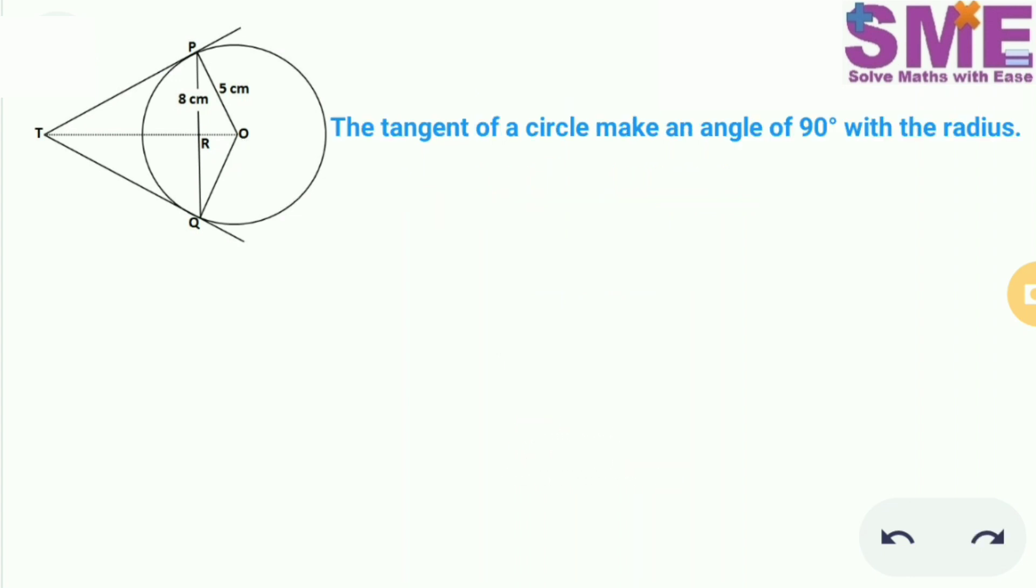Now we know that the tangent of a circle makes an angle of 90 degrees with the radius. Hence angle TPO will be equal to 90 degrees. So we can write angle TPO as angle TPR plus angle RPO. This will be equal to angle TPO which is equal to 90 degrees. So this is the first equation we get.